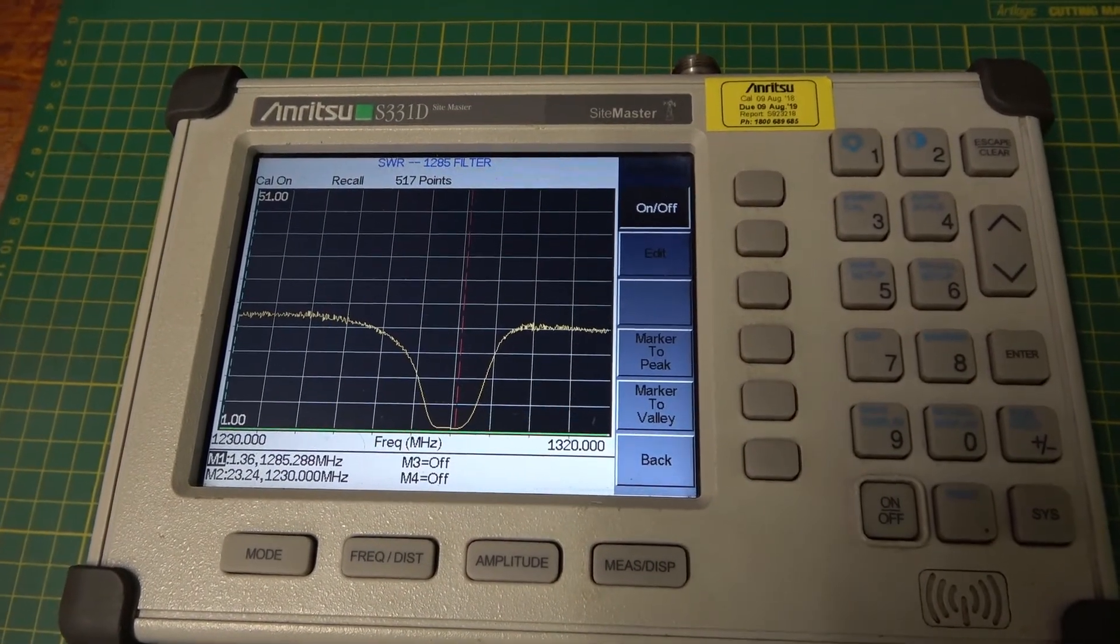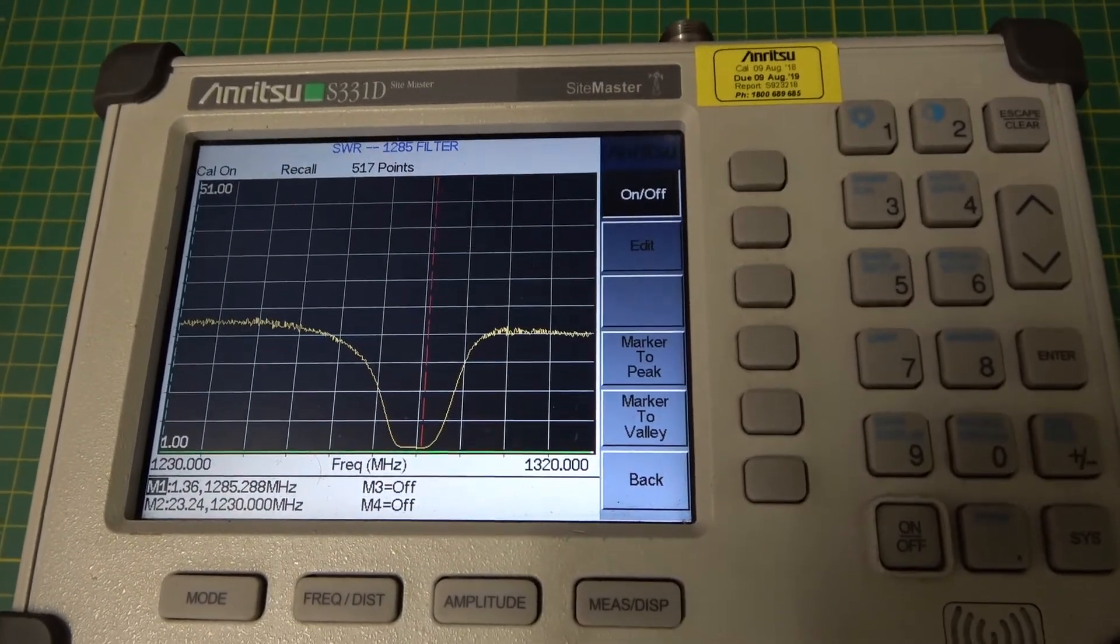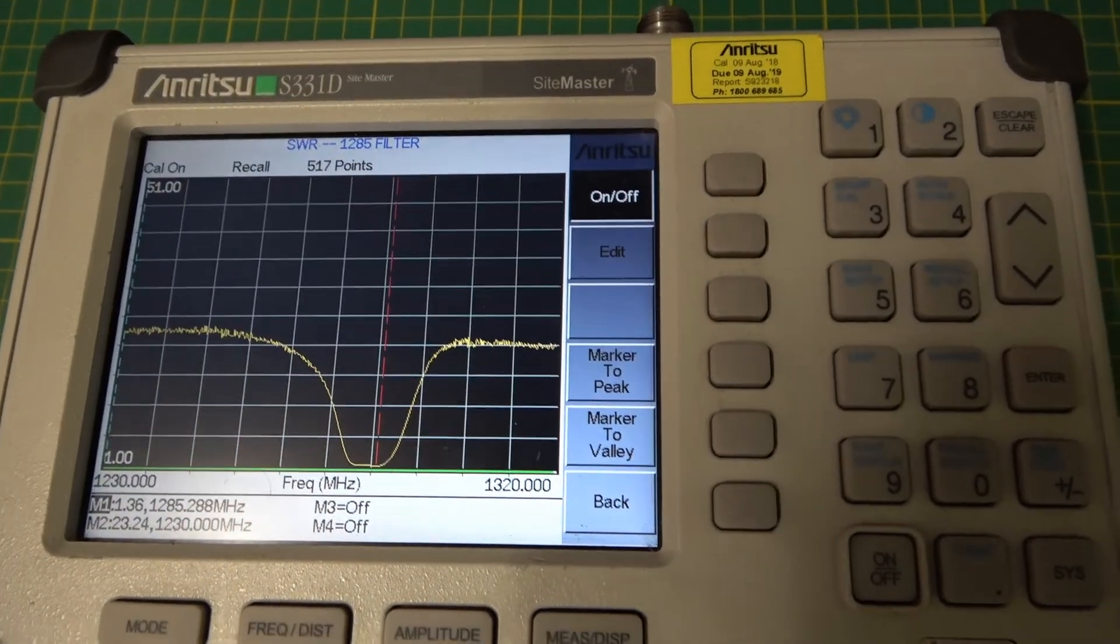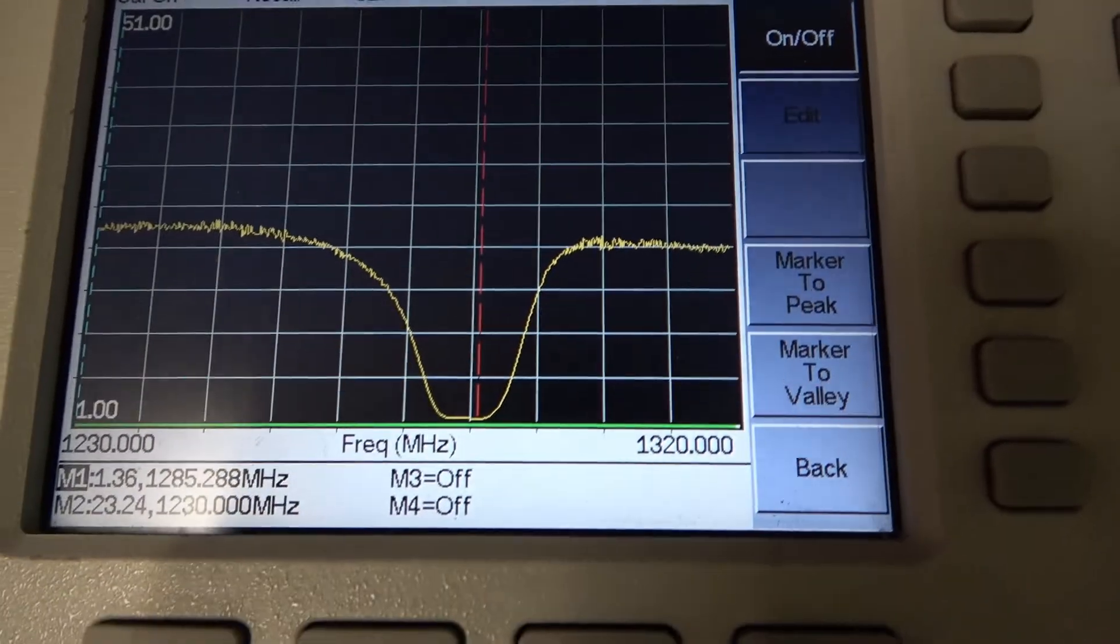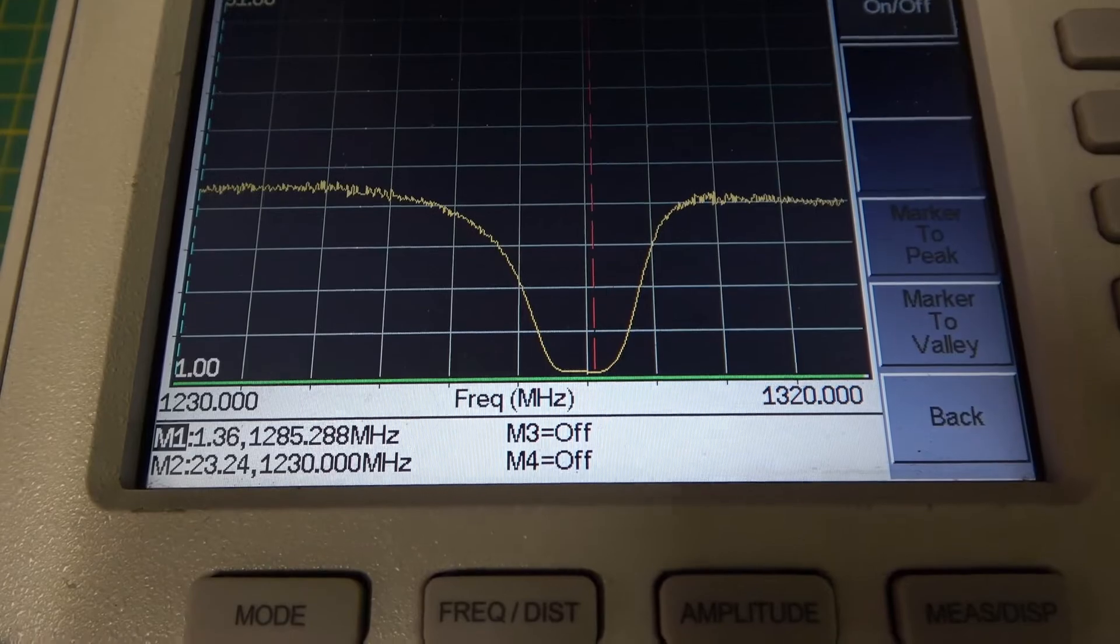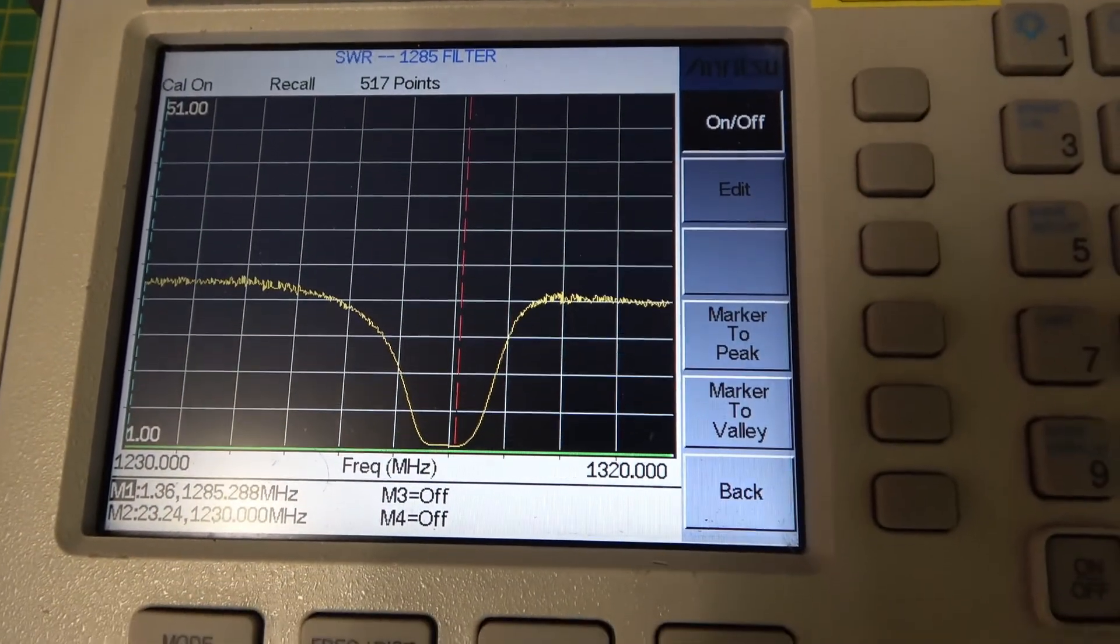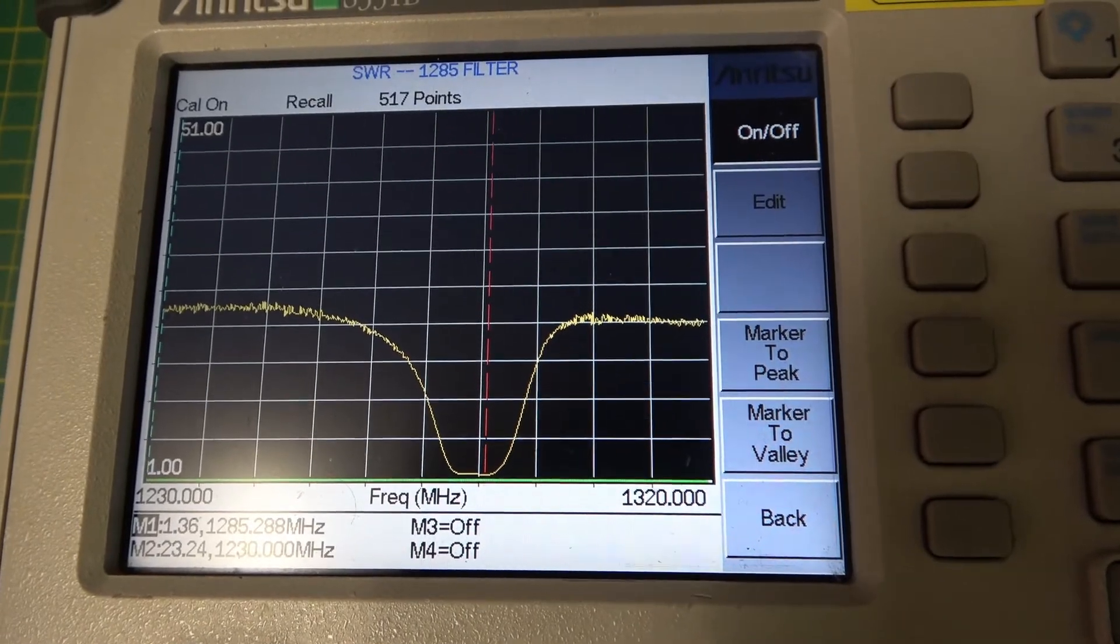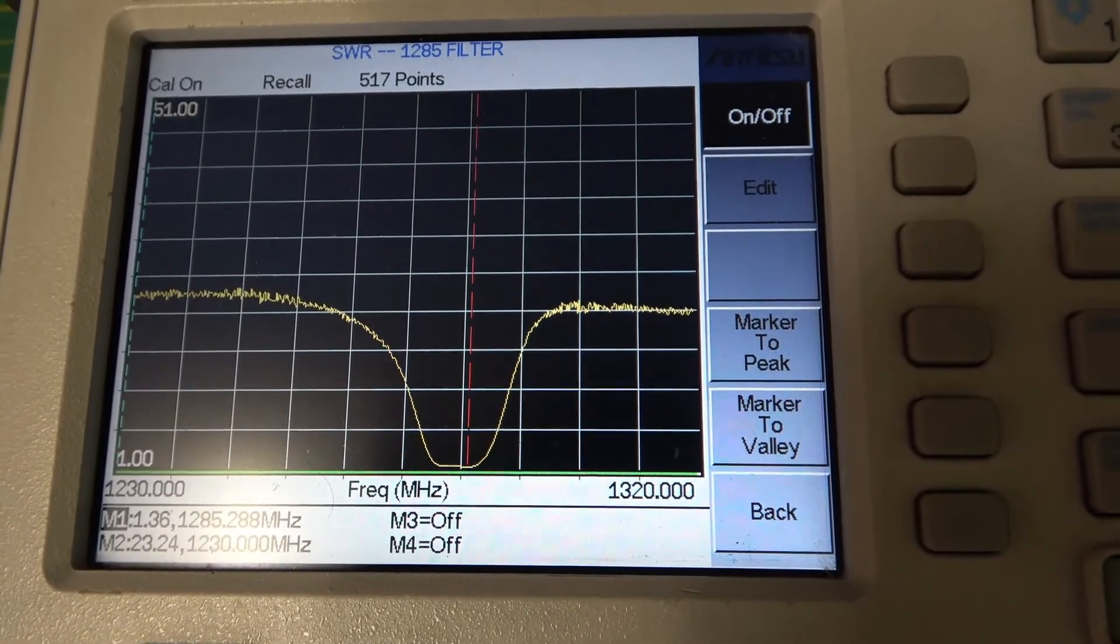To finish off the 1285 filter video, I thought I'd check the SWR with this Anritsu sight master meter. It's showing there that at 1285 megs, it's 1.36 to 1, which is I think quite acceptable. So not only is it a good band pass filter, it has a good match.